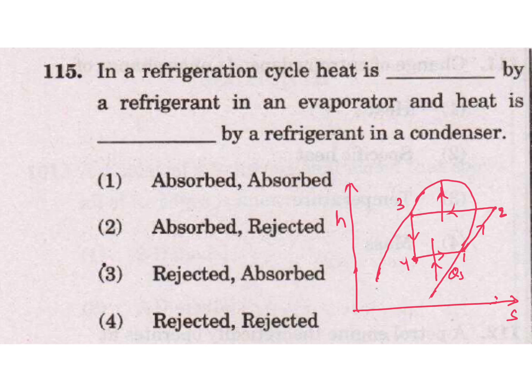4 to 1 heat is absorbed, rejected to the refrigerant. Heat is supplied. And 2 to 3 here in condenser heat is rejected to the atmosphere. So in this question, cycle heat is absorbed here 4 to 1 - heat is absorbed in evaporator, and heat is rejected in condenser 2 to 3. So 2 is our answer: absorbed and rejected.